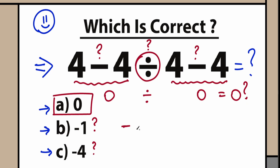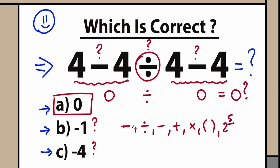Let's look closely at what we have. We have subtraction, division, and subtraction. In most cases we will have addition, multiplication, maybe parentheses, maybe powers like 2 to the power of 5. We need to know how to order all of this — in terms of priority — so we know which elements have higher priority and which have lower priority.